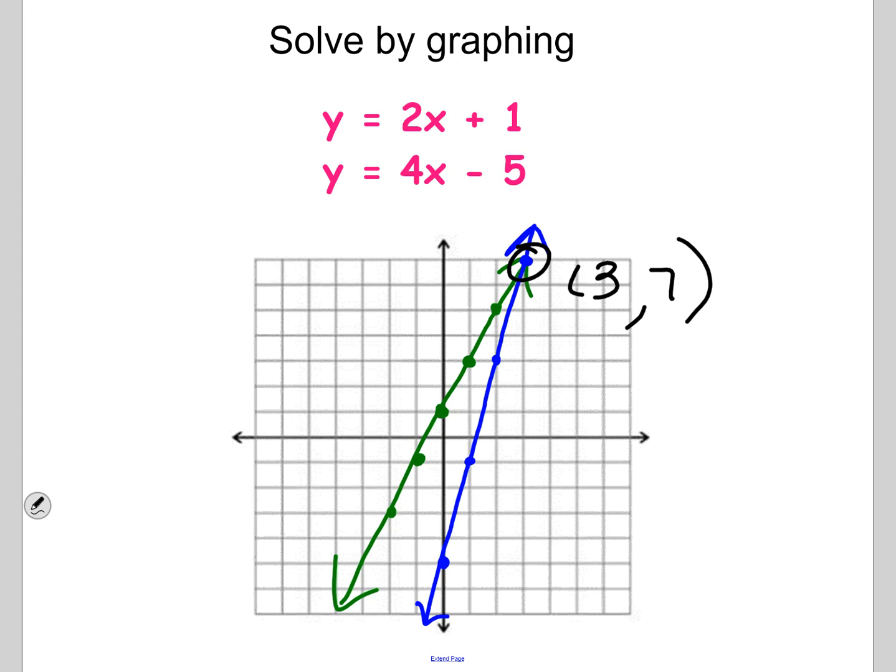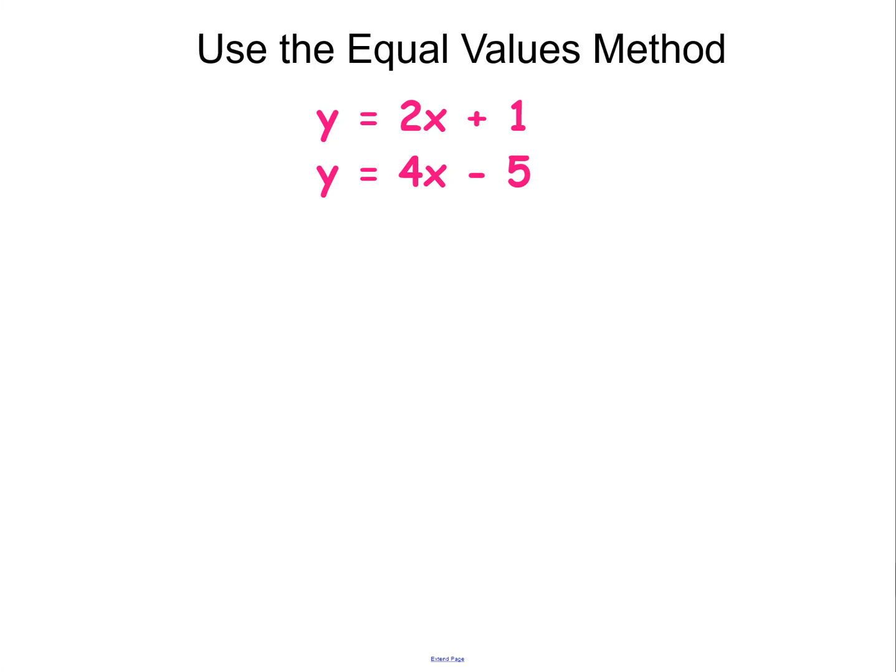That is going to be my point of intersection. So it's at 3 and 7. You can see those lines are intersecting at the point 3, 7. So there's how it looks in the graph.